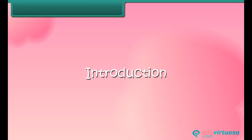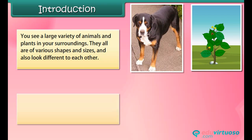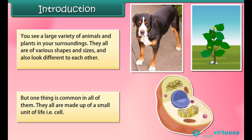You see a large variety of animals and plants in your surroundings. They all are of various shapes and sizes and also look different from each other. But one thing is common in all of them — they all are made up of a small unit of life, that is, the cell. In this module we are going to learn about cell and its structure.